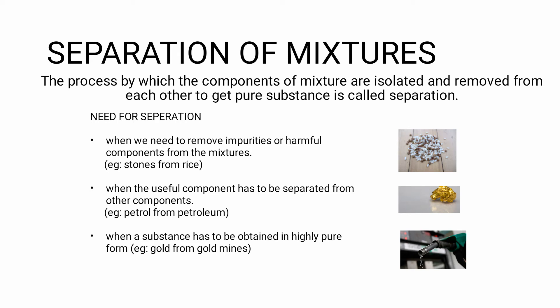First is separation of mixture. The process of separating each component combined in a mixture — that is, isolating and removing it from the mixture to get a pure substance — is called separation. Why do we need the separation process? There are some examples to explain this.